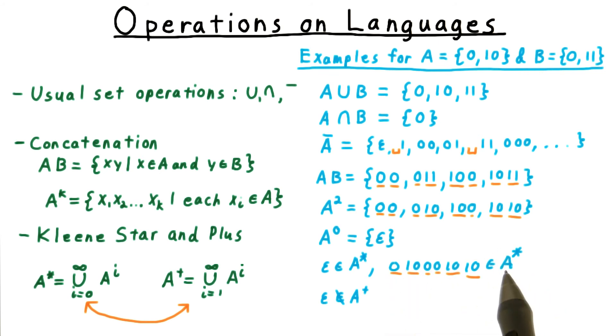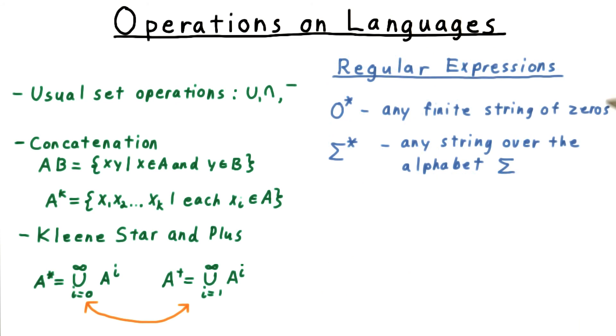So, for example, this string here is in A star. There's a way that I can break it up so that each part is in the language A. Note that A star doesn't include infinite sequences of symbols. Each individual string from A must be a finite length, and you're only allowed to concatenate a finite number of those together. For those who have studied regular expressions, this should seem quite familiar. In fact, one gets the notation for regular expressions by treating individual symbols as languages. For example, 0 star is the set of all strings consisting entirely of zeros. We'll also commonly refer to sigma star, meaning all possible strings over the alphabet sigma.